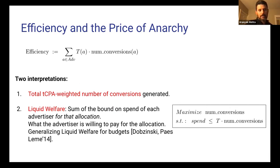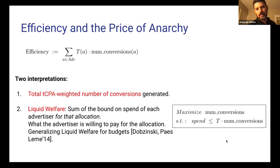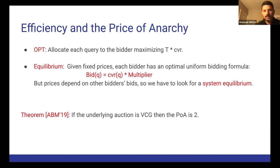There are two interpretations for this metric. First, it is simply the total TCPA-weighted number of conversions generated, essentially the value of conversions generated. It also fits into the literature as liquid welfare, where for a given allocation we take the sum over all advertisers of the bound on the spend of each advertiser. Because the TCPA bidding constraint is that the spend is at most T times the number of conversions — exactly that right-hand side bound goes into the efficiency measure. The optimal allocation is to allocate each query to the bidder which maximizes target times conversion rate.